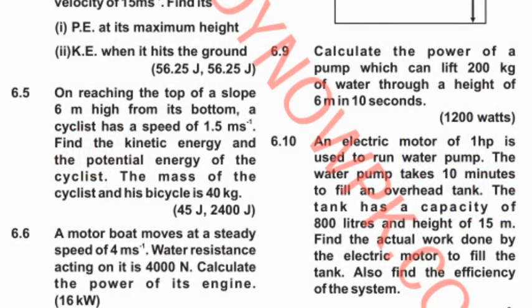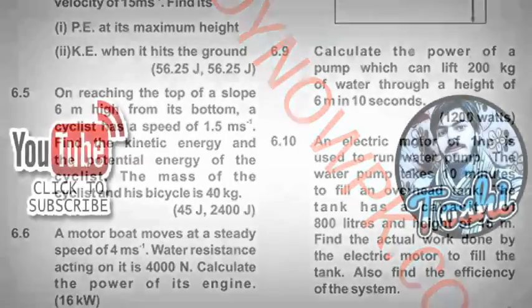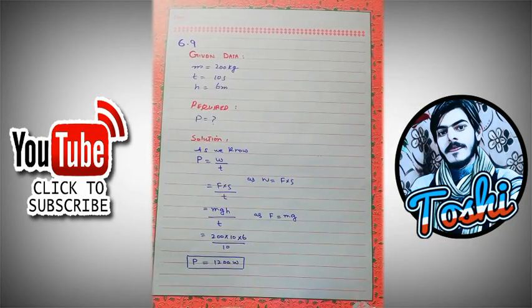Now come to numerical number 6.9. Calculate the power of a pump which can lift 200 kg of water through a height of 6 meters in 10 seconds. We need to find the power of the pump.